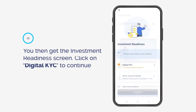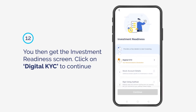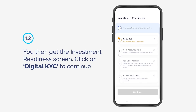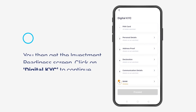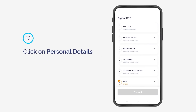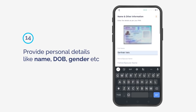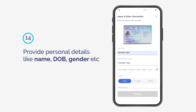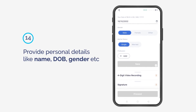You then get the Investment Readiness screen. Click on Digital KYC to continue. Click on Personal Details and provide personal details like name, date of birth, gender, etc.